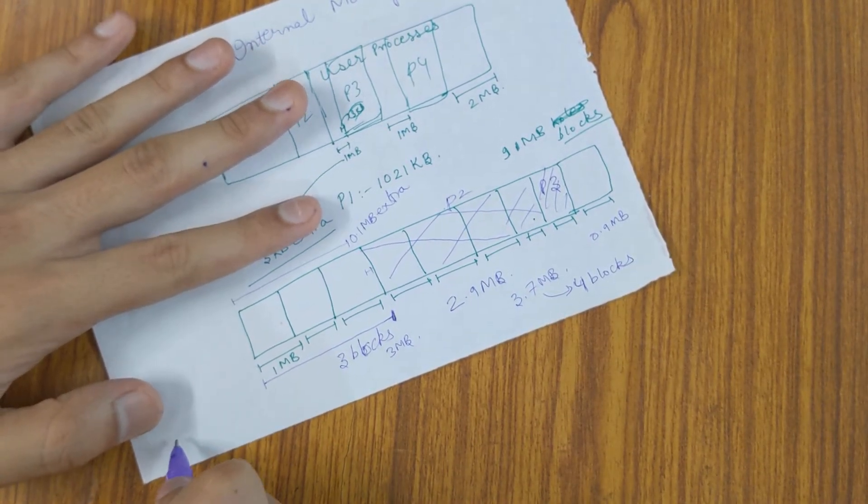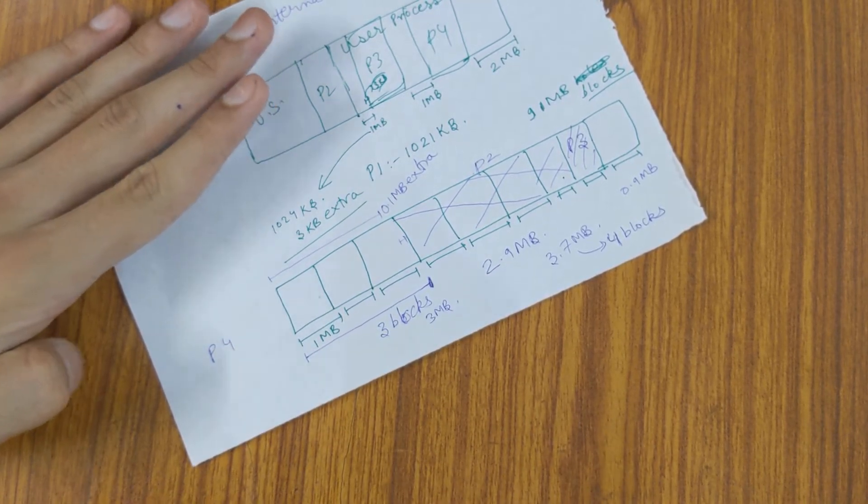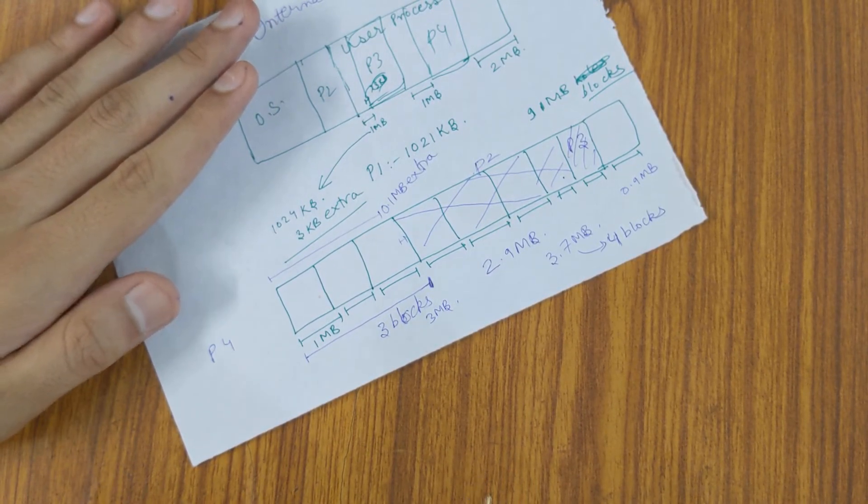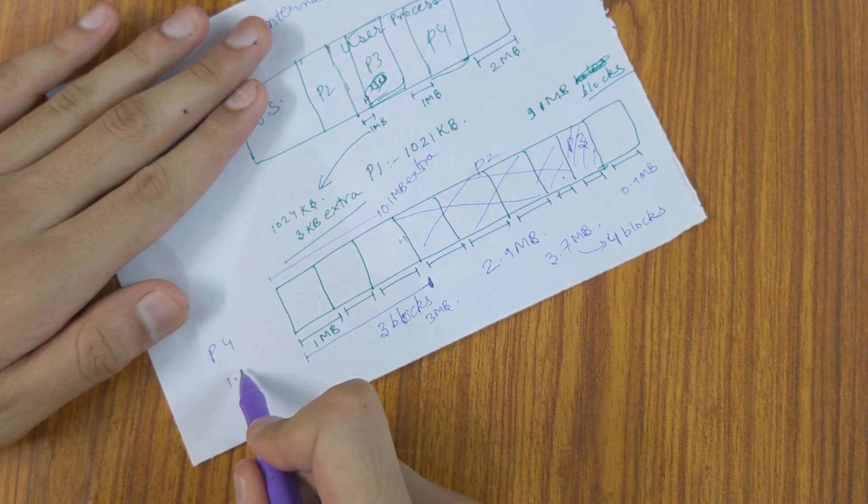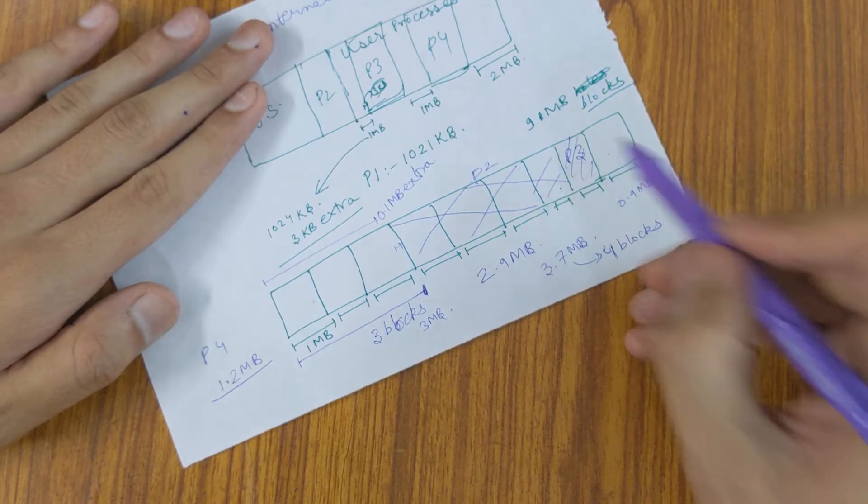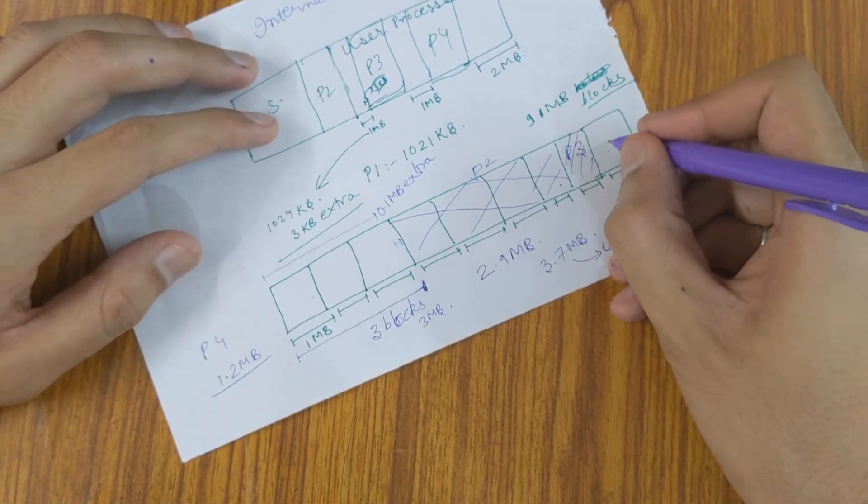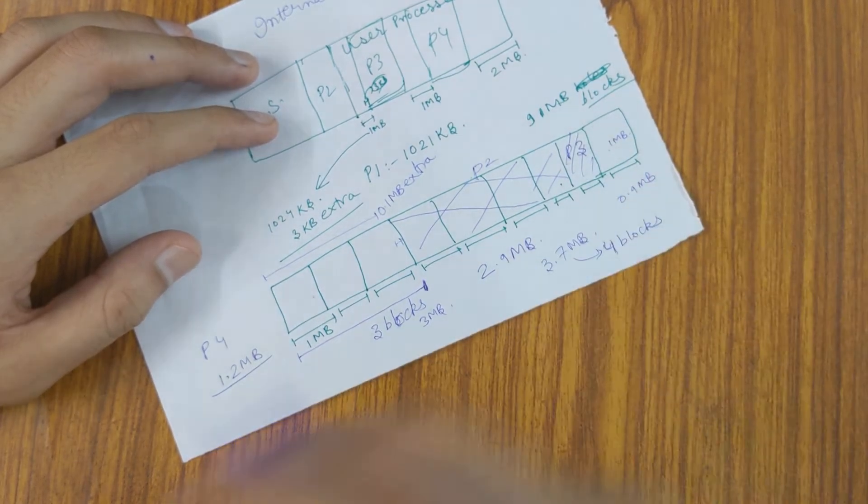Now, a process P4 comes which is having a memory requirement of 1.2 MB. Now we have just 1 block left which is of 1 MB. So, we cannot allocate this process.